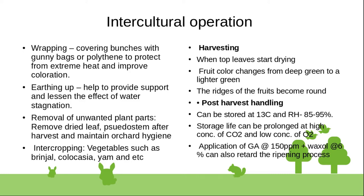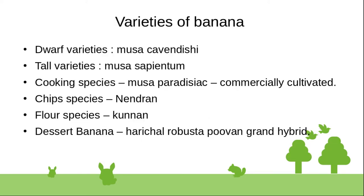Application of GA hormone at 150 ppm and wax oil at 6 percent can also retard the ripening process.